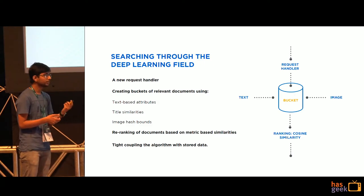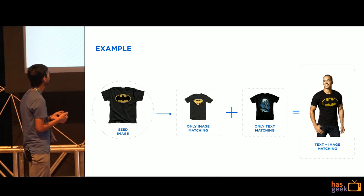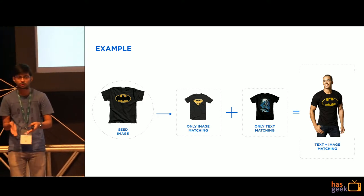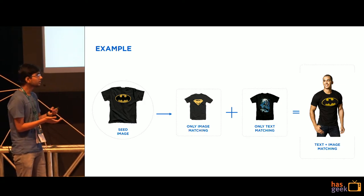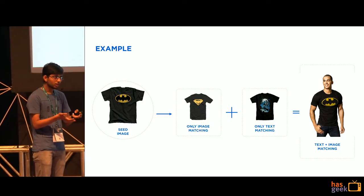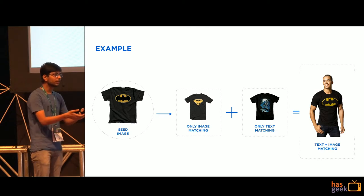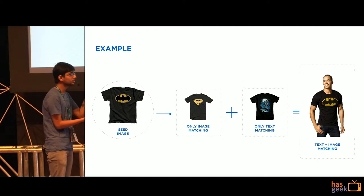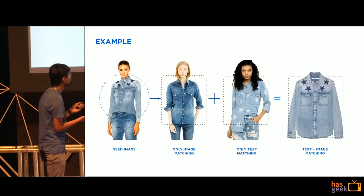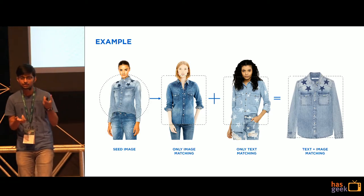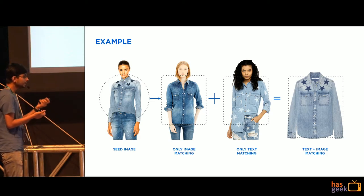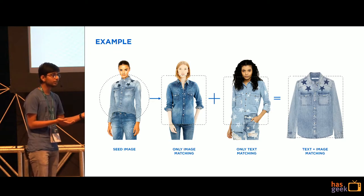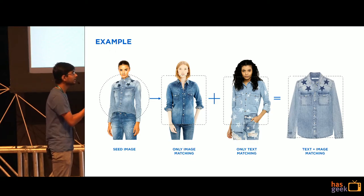Let me show some examples where the combination of text-based and image matching helps. For a Batman shirt search, if you go completely by image matching you might land on a Superman shirt that looks too similar to your seed image. With pure text matching, you might land on a product in the Batman category but with a completely different image. But with the combination of both text and image, you land on an exactly matching product. Similarly, for a denim shirt where the defining attribute is stars, image matching alone might find a visually similar denim shirt that isn't the right product, while text matching finds the right attributes but a different-looking image. With both mechanisms combined, you find an exactly matching product.